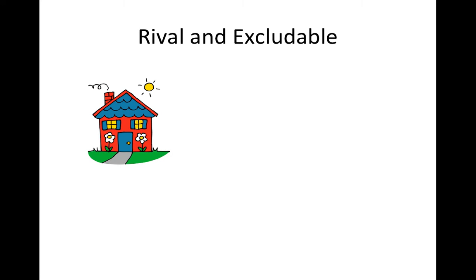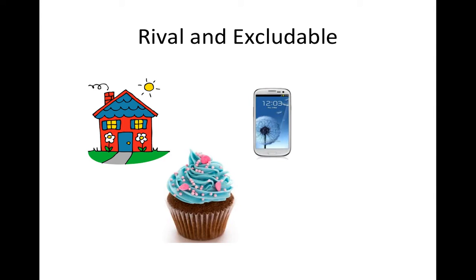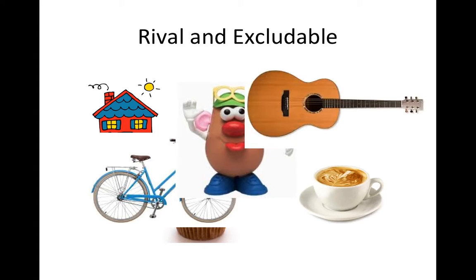Most private goods are rival and excludable. If a good is rival, if I consume some of it, there is less available for you. In addition, it is possible for me to prevent you from enjoying the good, for example, by making you pay for it. Examples of rival and excludable goods include a house, a cupcake, a cellphone, a cup of coffee, or just about any other consumer product you can think of.